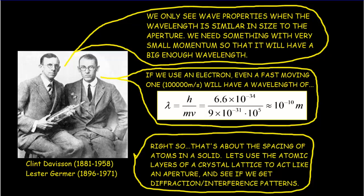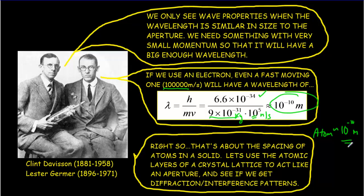They use de Broglie's formula to calculate a typical wavelength for an electron. Taking a fast-moving electron at 100,000 meters per second and substituting in Planck's constant, the mass of the electron in kilograms, and that speed, the calculation gives an answer of about 10 to the minus 10 meters. What in the real world has a size of about 10 to the minus 10 meters? The size of an atom is about 10 to the minus 10 meters, while a nucleus is about 10 to the minus 15 meters.